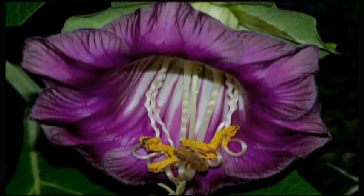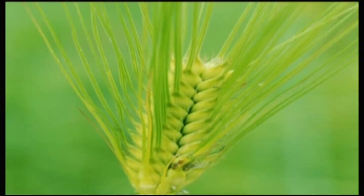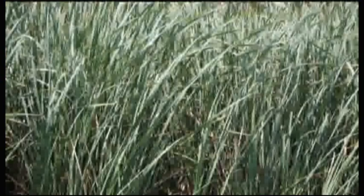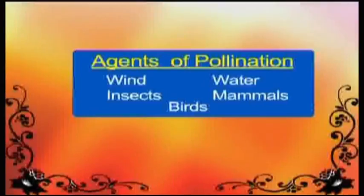Some examples of wind-pollinated plants are wheat, rice, maize and ryegrass.